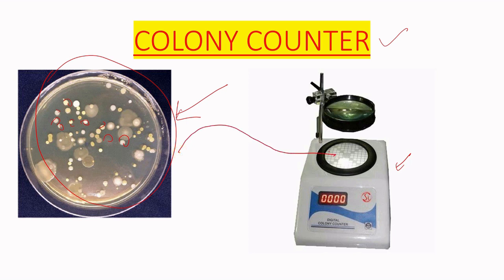First, we put the petri plate into this position. A quadrant is present here so we can count. A magnifying glass is present and one pen is given with this equipment or instrument. We will observe the petri plate from this direction through the magnifying glass.